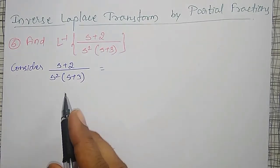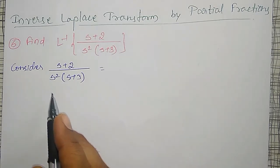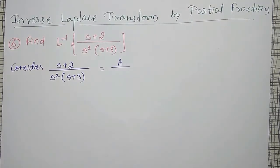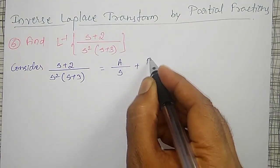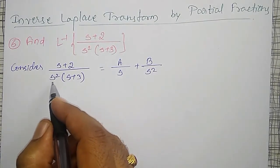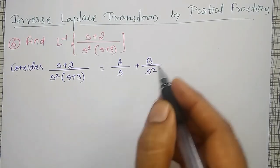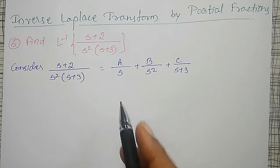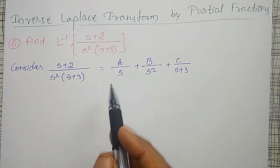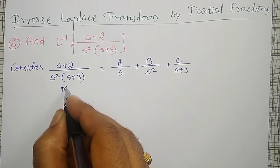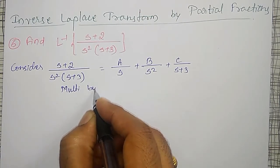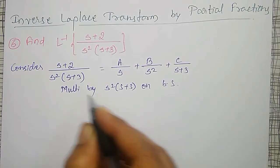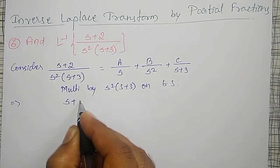To convert it into partial fractions — s² is a quadratic form, therefore I can write it as A/s plus B/s². The next linear term gives C/(s+3). Now I have to find the values of A, B, and C. Multiplying both sides by s²(s+3), I get s+2 equal to A·s(s+3) plus B(s+3) plus C·s².